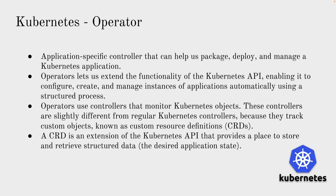Let's take the example of a stateful set — its responsibility is to run stateful applications. In the same way, using an operator we are going to create our own resource. If we do `kubectl get statefulset` we get stateful set objects. Now we have our own object, our own resource, where we can define our own kind. We can do `kubectl get <our-own-kind-name>` and it will list our own resources. We will have our own Custom Resource Definition (CRD) which holds the definition and creates the API for our own resource.